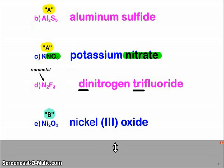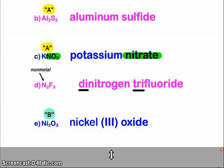And then our last one. Two elements, nickel and oxygen. Nickel is a metal. Nickel is a B element because it can form more than one type of ion. Again, how do we know that it's nickel 3?